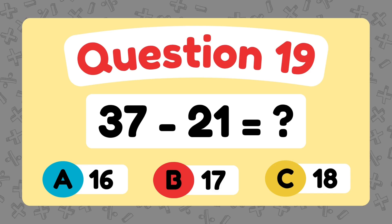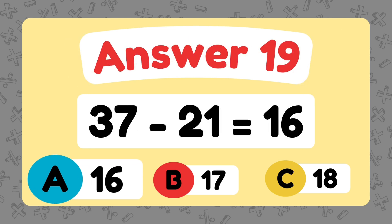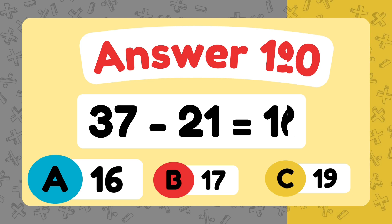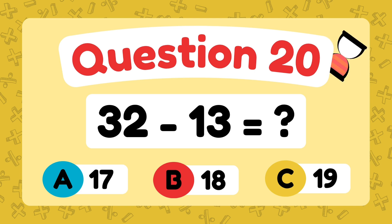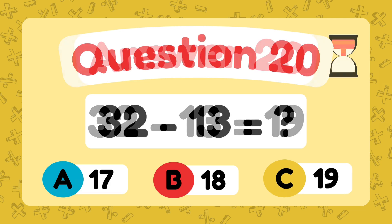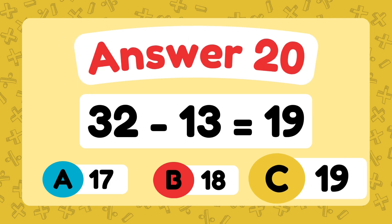What is 37 minus 21? The answer is 16. What is 32 minus 13? The answer is 19.